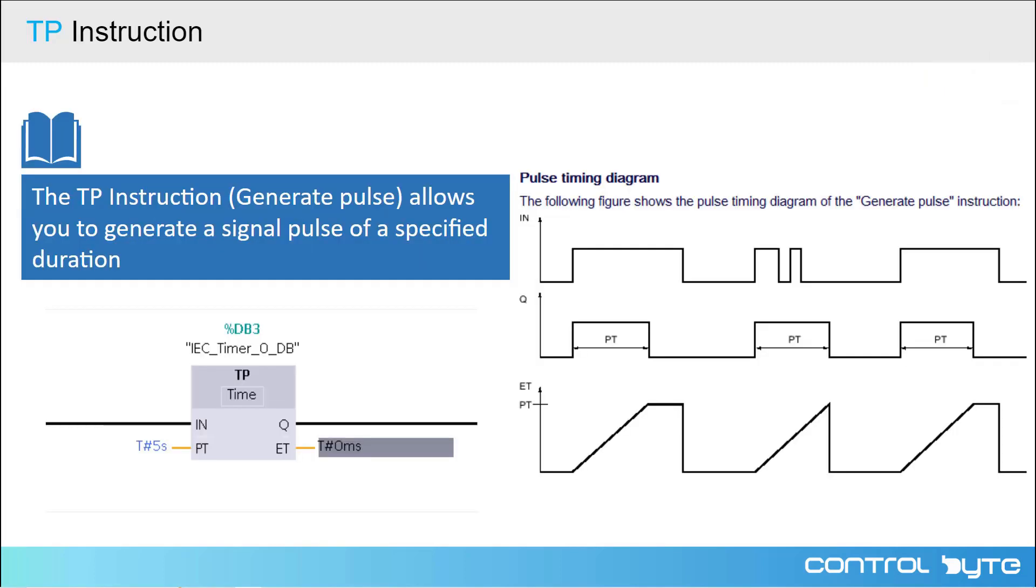Let's start with the TP instruction that allows you to generate a signal pulse of a specified time duration. In the memory of PLC, such a timer is declared as a DB block. The symbol of timer has two inputs, IN and PT. On the IN input, we add result of last logic operation. On the PT input, we add the time that specifies duration of our pulse on output.